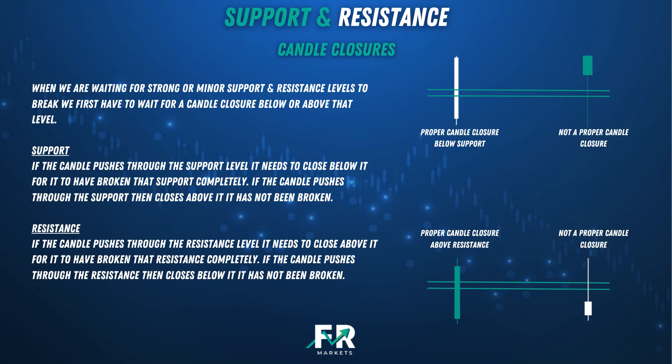Number 3: trend lines — adding a trend line and waiting for the trend line to break will indicate a reversal. When waiting for strong or minor support and resistance levels to break, we first have to wait for a candle closure below or above that level. If the candle pushes through the support level it needs to close below it for support to be fully broken. If the candle pushes through support then closes above it, support has not been broken. At resistance, if the candle pushes through the resistance level it needs to close above it for resistance to be fully broken. If the candle closes below the resistance level, it has not been broken.